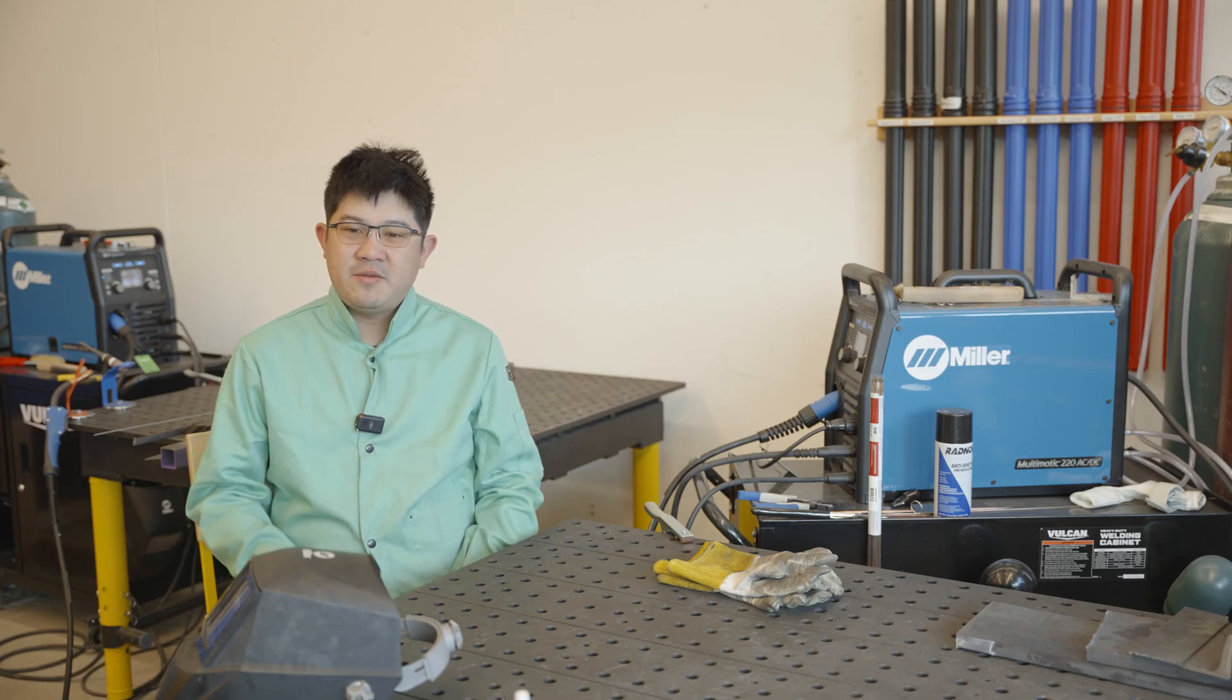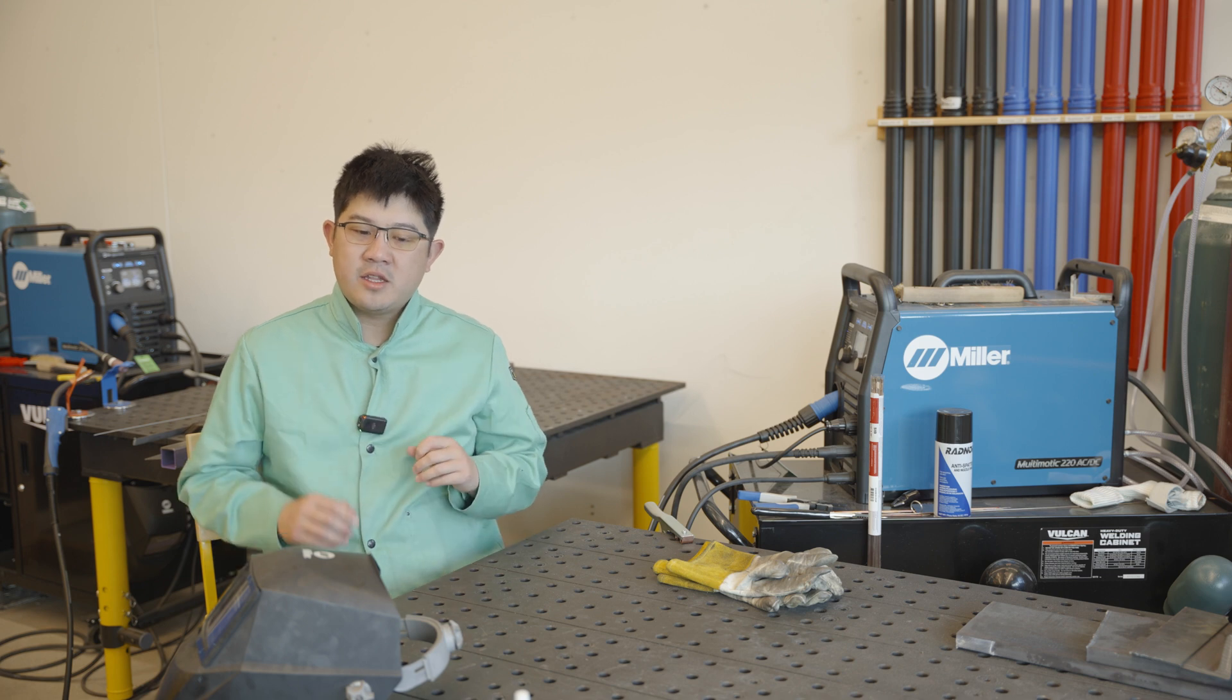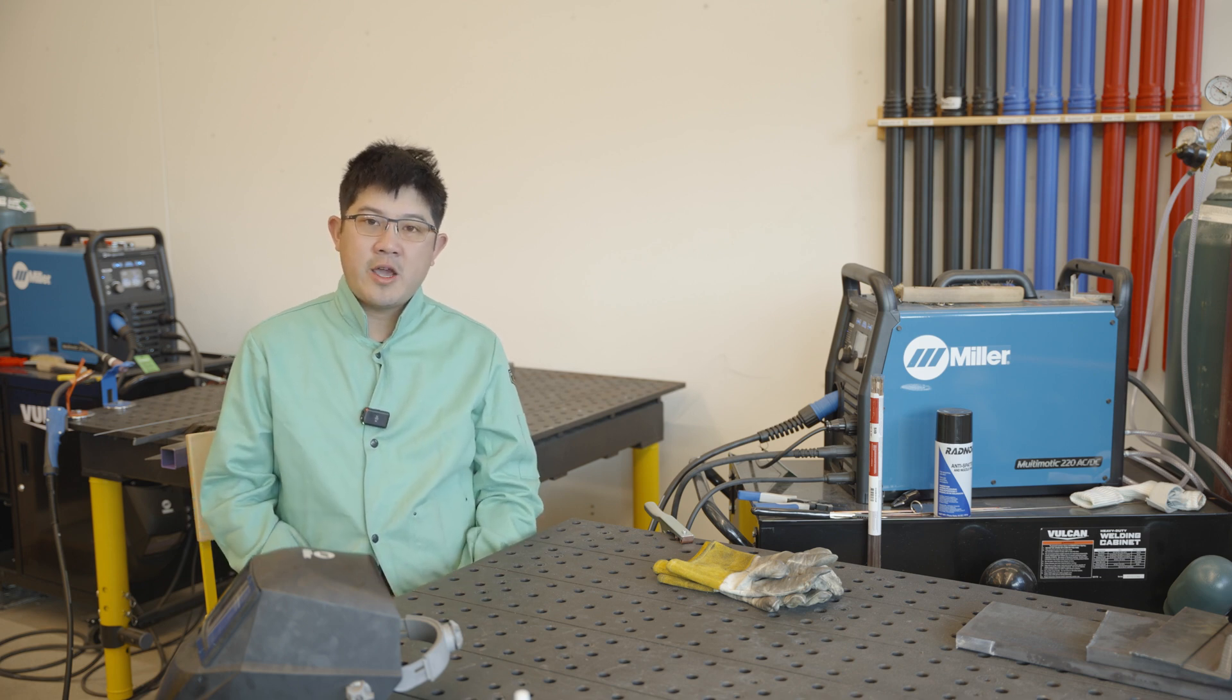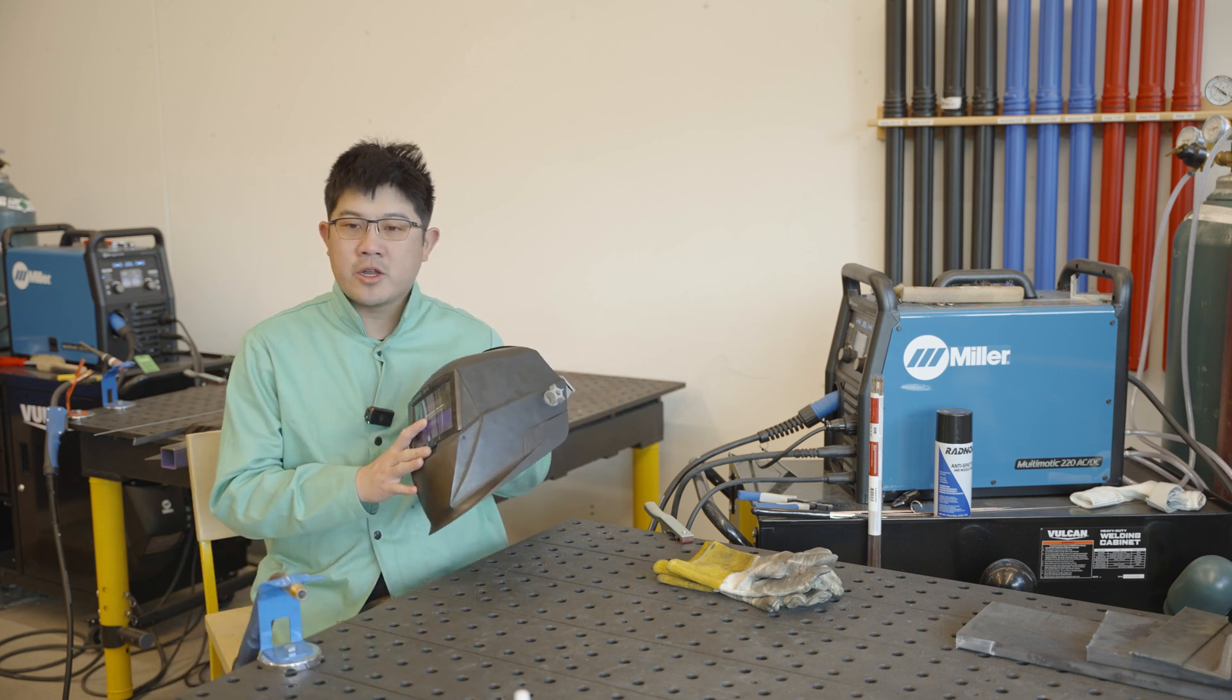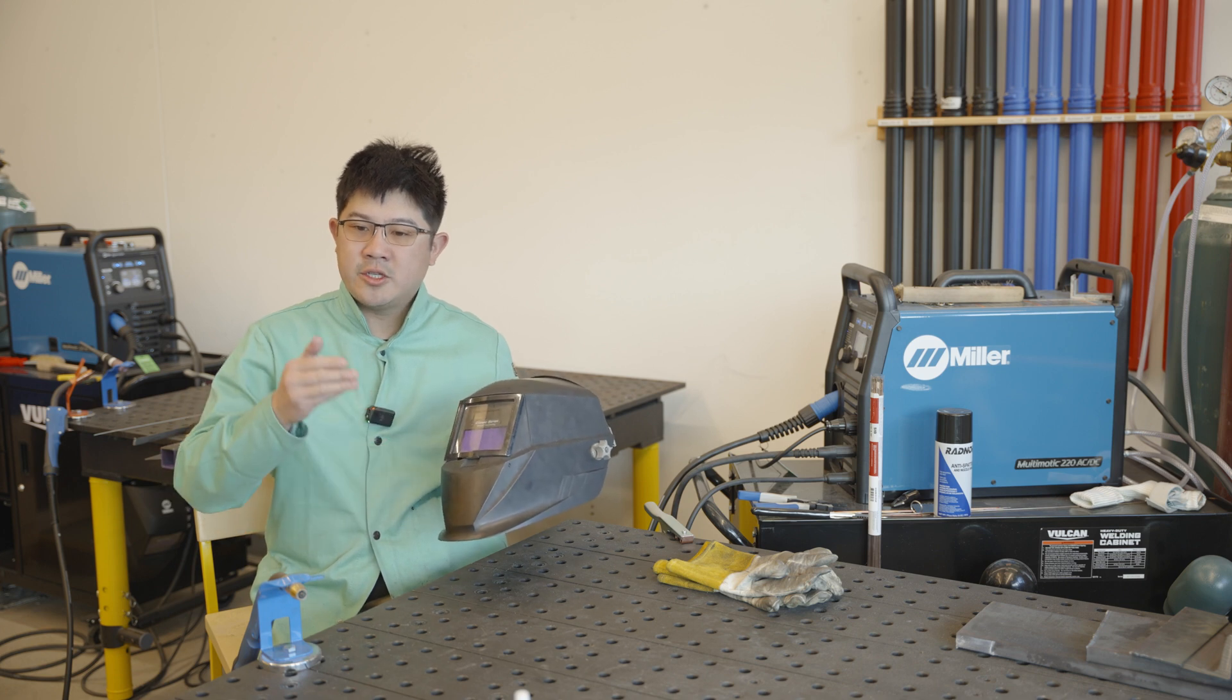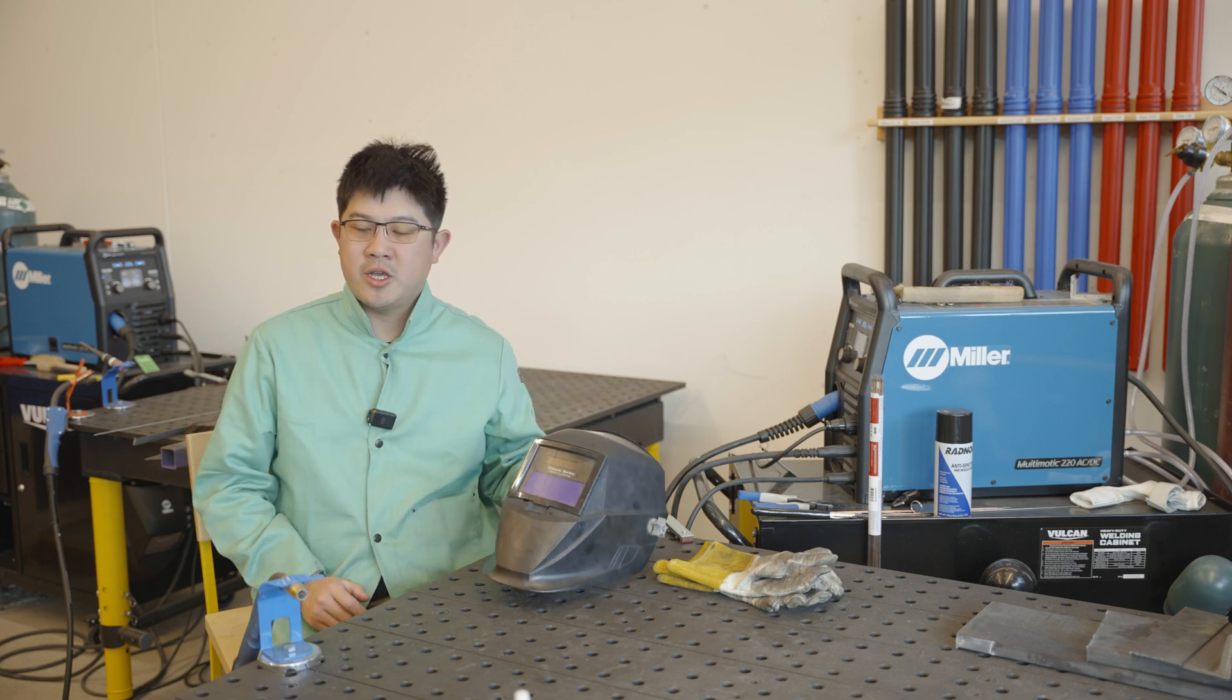So before we start, let's talk about safety real quick. There's a couple of key things to know when you're MIG welding. Number one being that the light MIG welding produces is very bright, almost as bright as the sun, which as you can imagine is not very pleasant to look at. So we have these welding hoods. These auto-darken so that you can see your workpiece, and when you start welding, the lens darkens so that it protects your eyes.